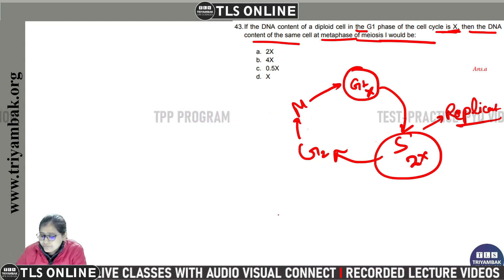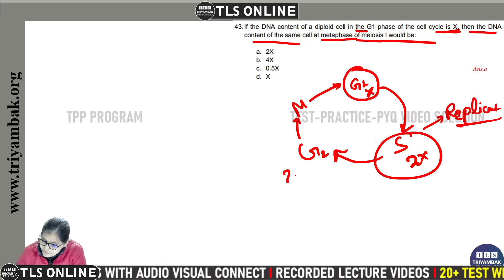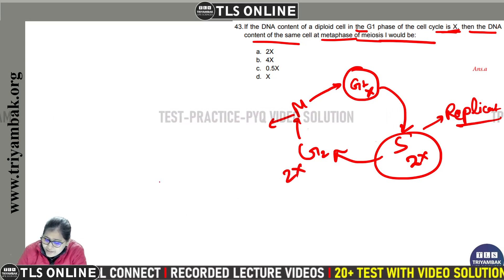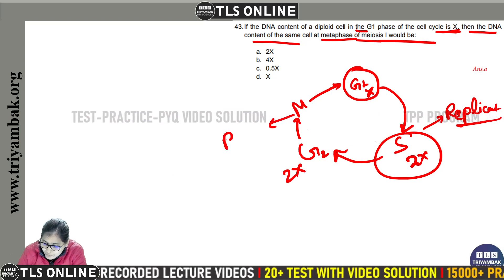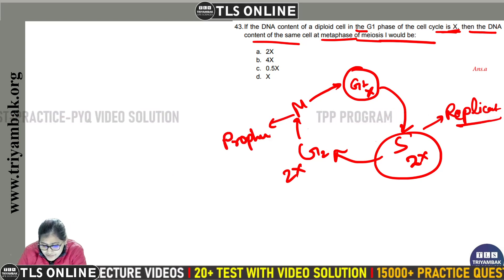Now G2 phase mein bhi content 2x rahega. M phase mein agar ham shurwaat karayin to M phase mein prophase mein, prophase mein bhi 2x rahega.